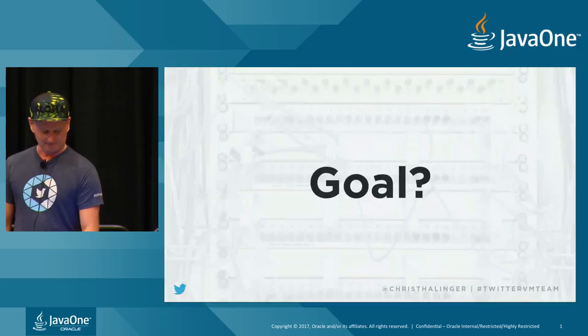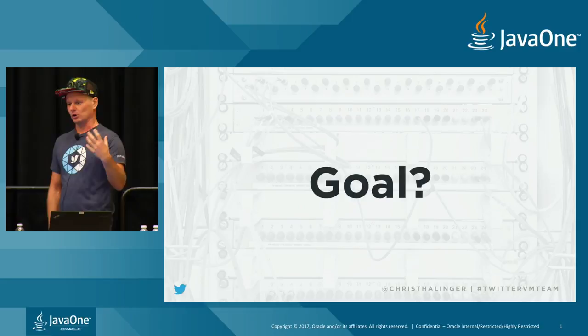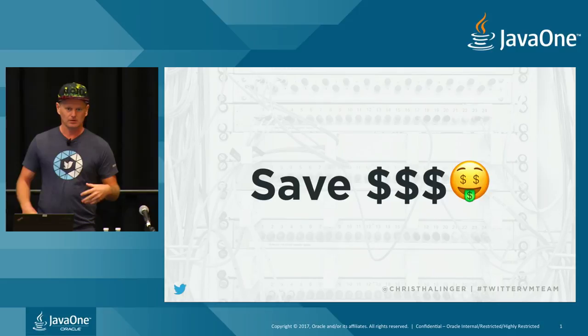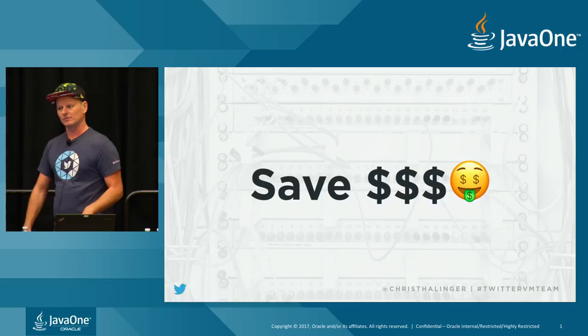So the talk — what's the goal? I'll basically show you what we did at Twitter with Graal and what the outcome was. The goal for us was always to save money, because Twitter is a big service with lots of machines and servers. If you can shave off a bunch of CPU time, you will save a lot of money.